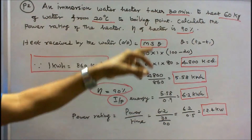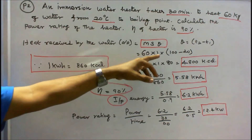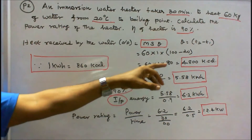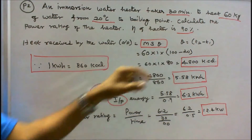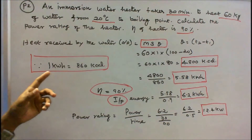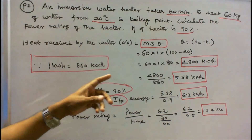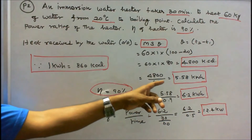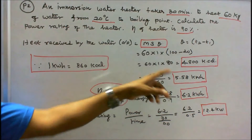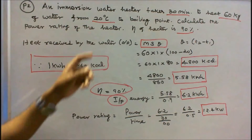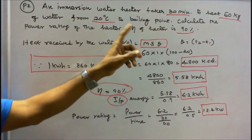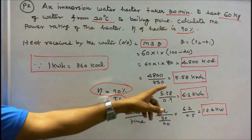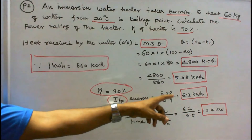M = 60, S = 1, θ = 100 − 20 = 80. So 60 × 80 = 4800 kilocalories. We know 1 kWh = 860 kcal, so 4800 divided by 860 = 5.58 kWh — that is the output. Efficiency is 90% = 0.9, so input energy = 5.58 divided by 0.9 = 6.2 kWh.